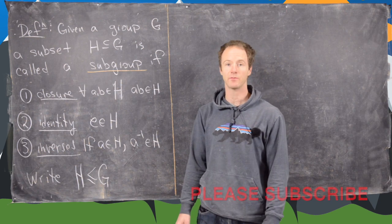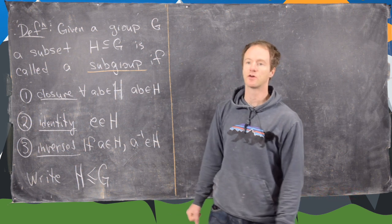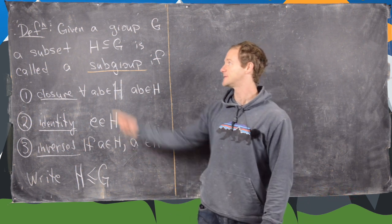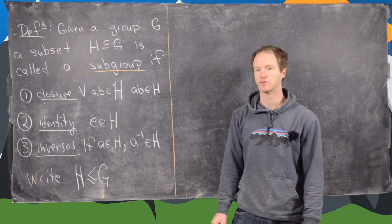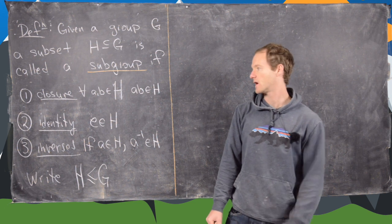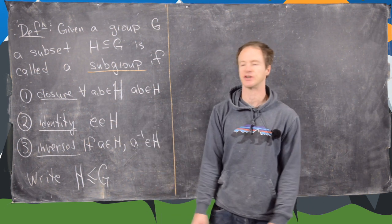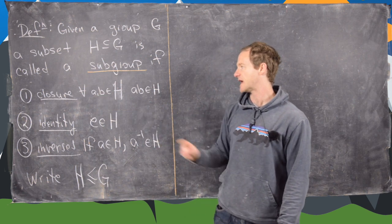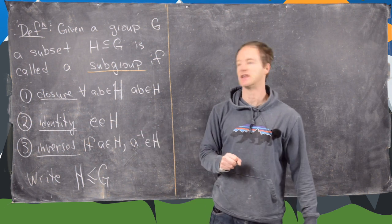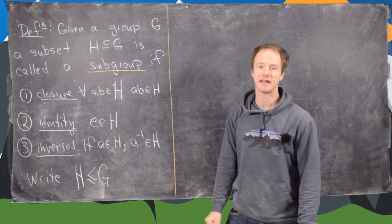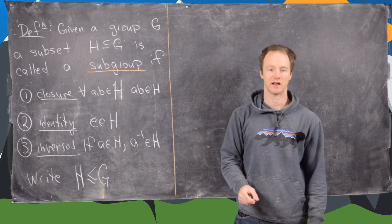In this video we want to talk about subgroups of a group. Given a group G, a subset H of G is called a subgroup if it is a group itself. In more detail: it is closed under the operation — if A and B are in H, then A times B is in H. It contains the identity, and it contains all necessary inverses: if A is an element of H, then A inverse is an element of H.